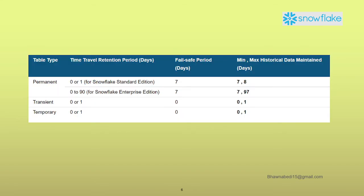Looking at this chart: for time travel retention period, permanent tables default to 0 to 1 day, and with Enterprise Edition you can extend it up to 90 days. Transient or temporary tables have a range of 0 to 1 day. For fail safe, transient and temporary tables have a 0-day fail safe period — they are not recoverable in case of disaster. All permanent tables have a 7-day fail safe period in both Standard and Enterprise editions.